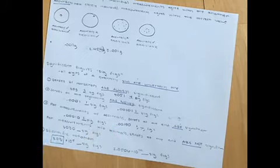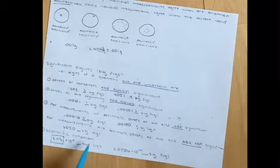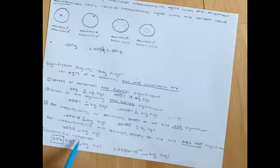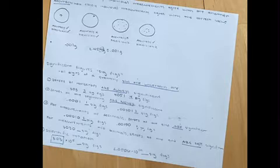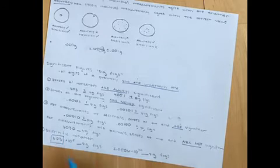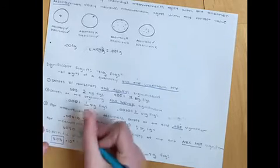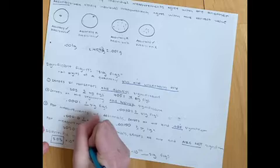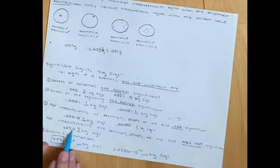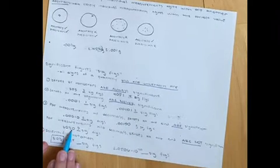However, for measurements without decimal places, zeros at the end are not significant. So for a number like 1230, there are only three sig figs because the trailing zero is not significant.